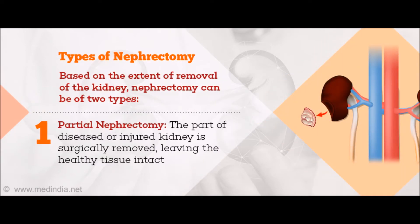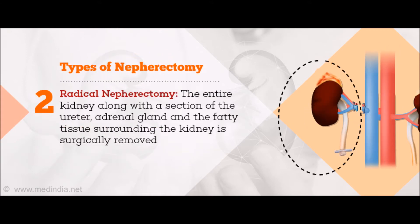Types of Nephrectomy: Based on the extent of removal, nephrectomy can be of two types. In Partial Nephrectomy, only part of the kidney is surgically removed, leaving the healthy tissue intact. In Radical Nephrectomy, the entire kidney along with a section of the ureter, adrenal gland, and the fatty tissue surrounding the kidney is surgically removed.